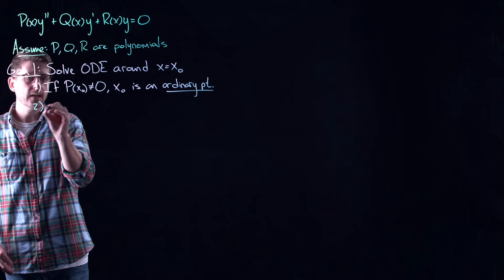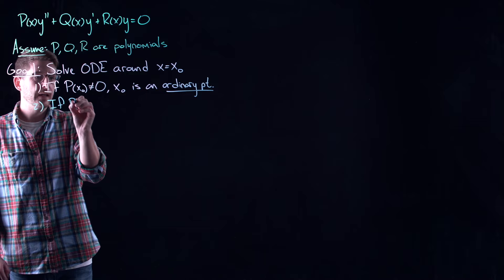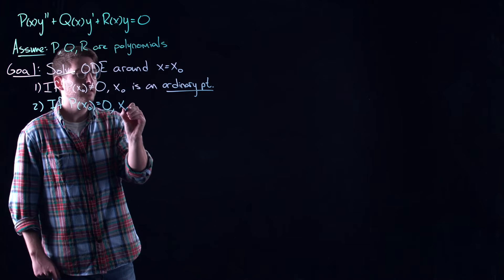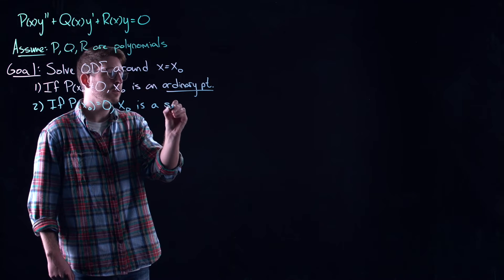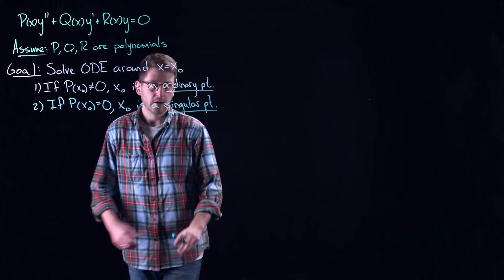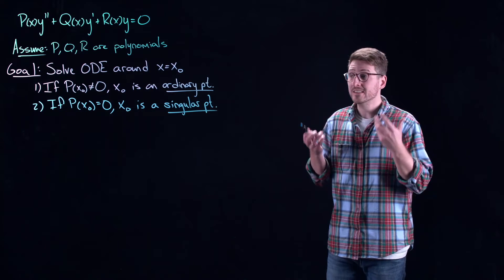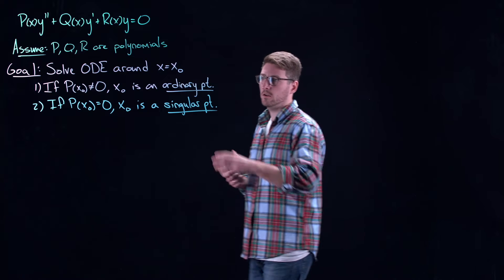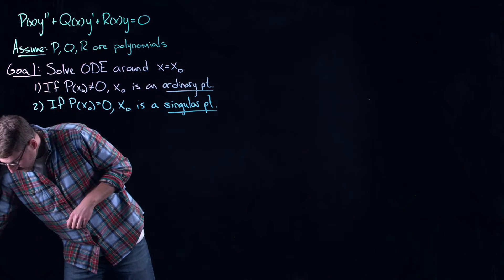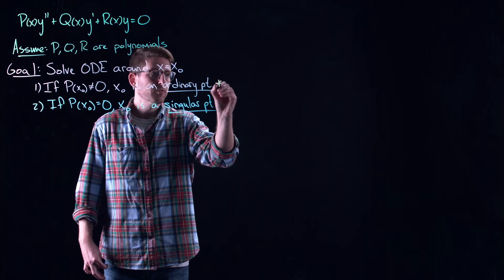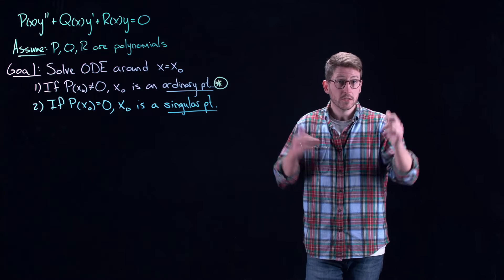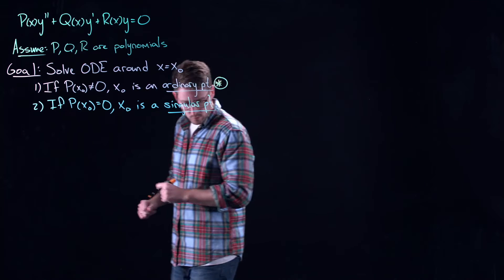The second case is when you have a root of p — we call these a singular point. If we try to divide by zero, that's a singularity in the equation, so the notation makes sense. We are going to start by focusing on ordinary points and work our way up to singular points later.